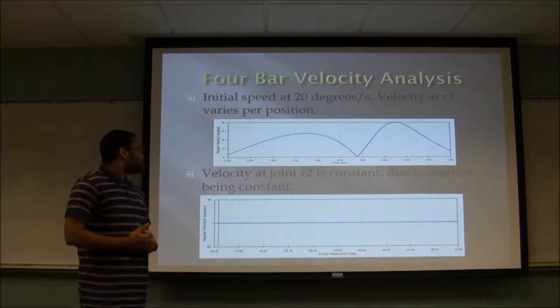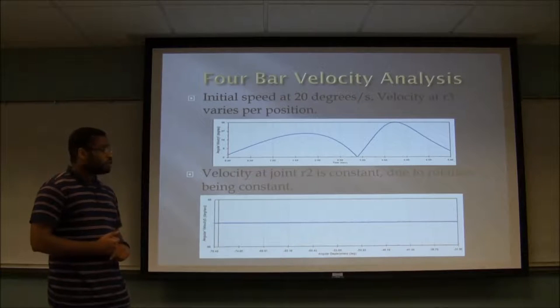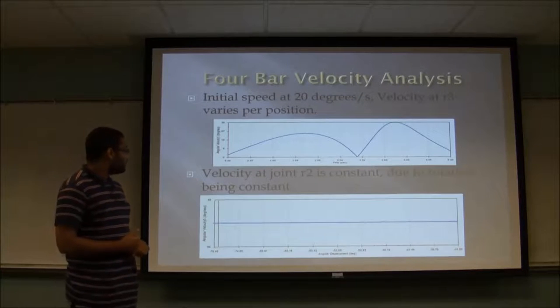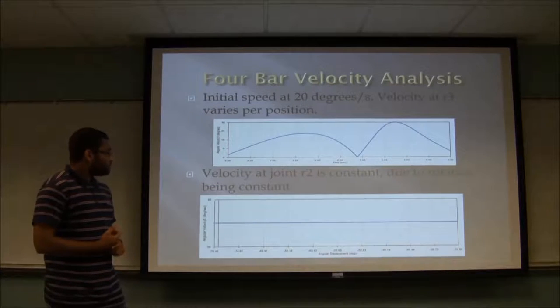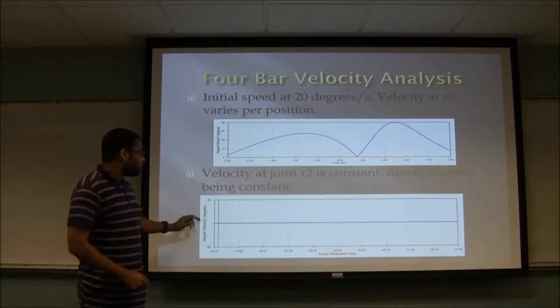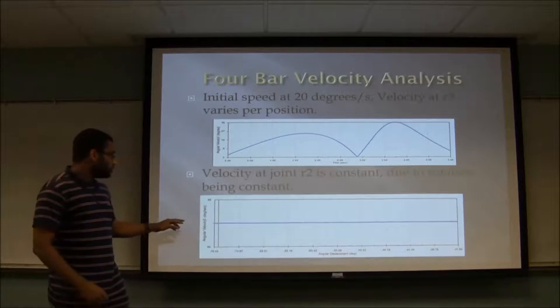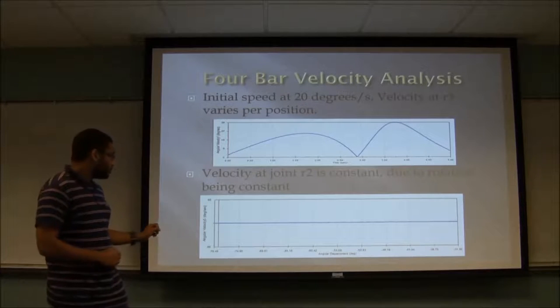The graph on top represents the angular velocity of R3 with regards to time. As you can see, that velocity is changing as it goes along, but for the angular velocity of R2, which is the one that's rotating, it is fairly constant at 66 degrees per second.